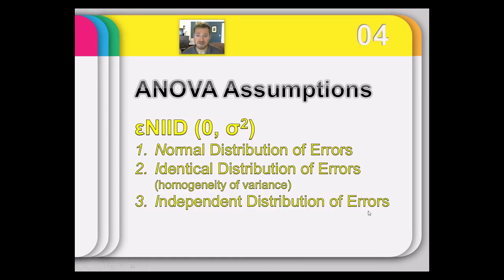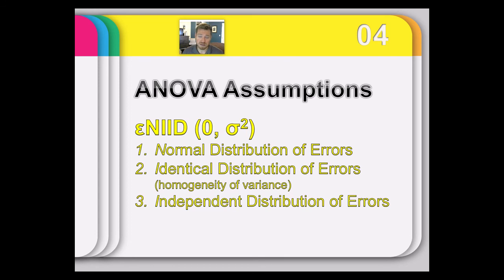There are assumptions in all tests. Most assumptions have to do with the distribution of errors. For our class, we're assuming errors are normally distributed — normally, independently, and identically distributed with a mean of zero and some specified variance. After we predict the score for a given person in a group, if we take all the ways we mispredicted for an entire group and plot them, they should look approximately normal. You can do these assessments in JASP.